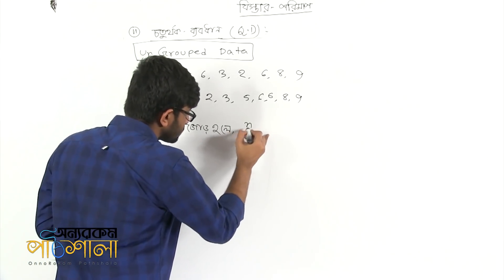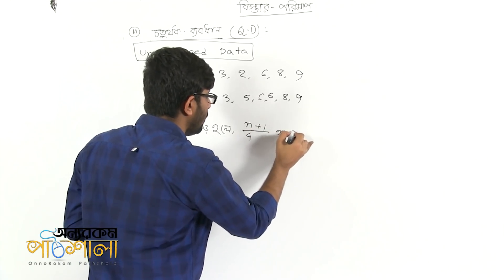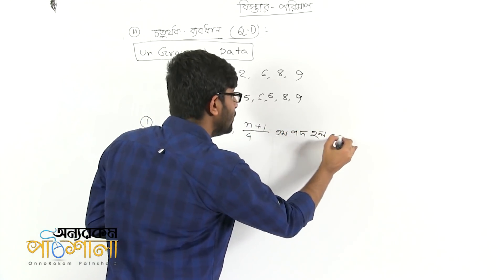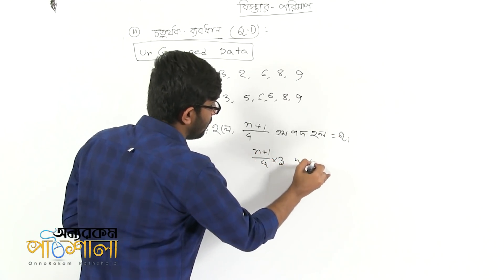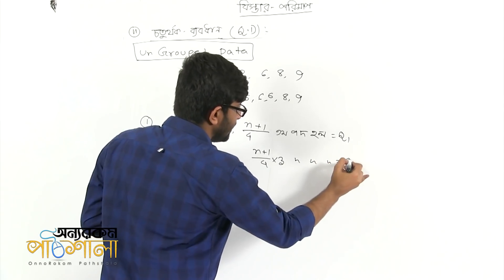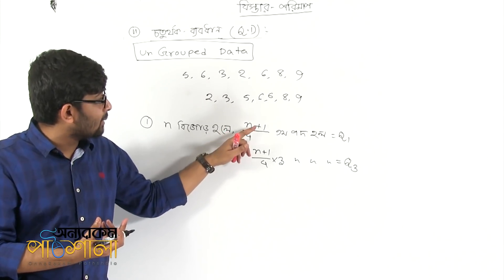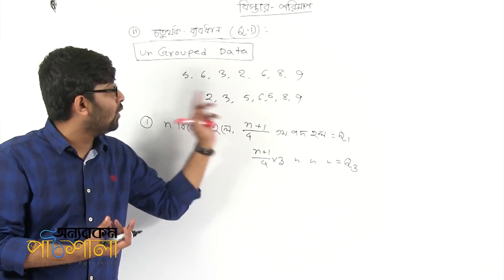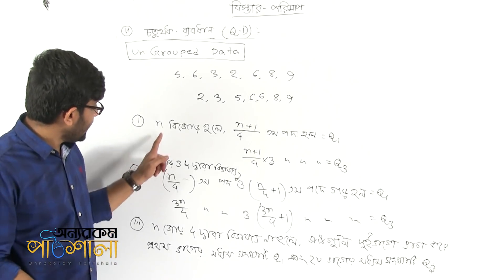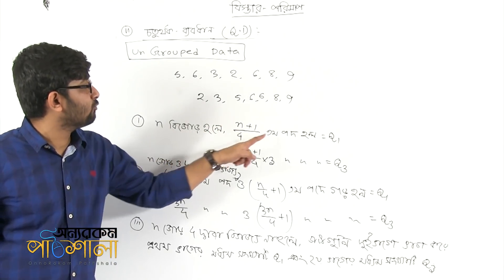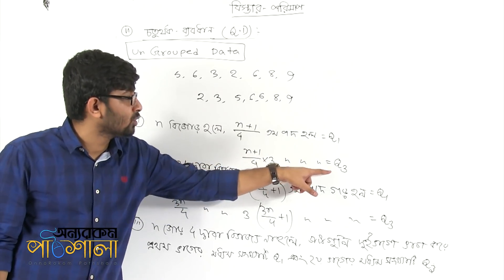Ultimately Q3. If n is given, then n plus 1 by 4, you can find Q1. And n plus 1 by 4 into 3, then you can find Q3.